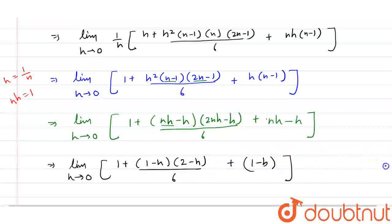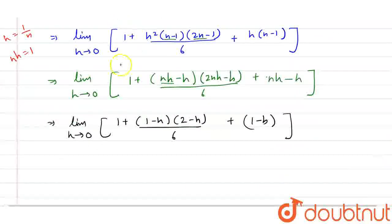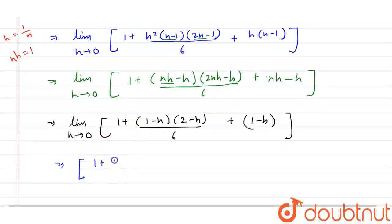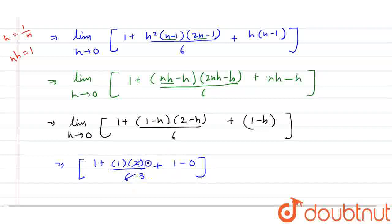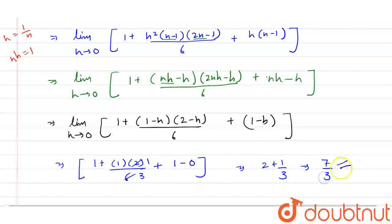Now putting h equals 0, we get 1 + (1)(2)/6 + 1 = 1 + 2/6 + 1 = 1 + 1/3 + 1 = 2 + 1/3. Taking LCM gives 7/3. So the answer is 7/3. I hope you guys liked it, thank you.